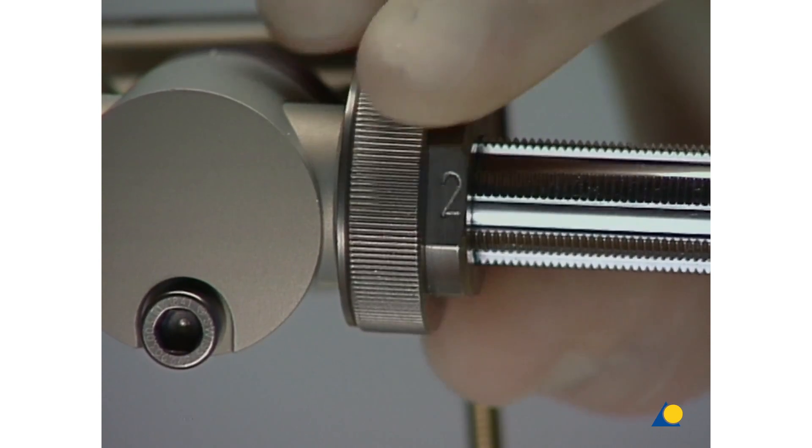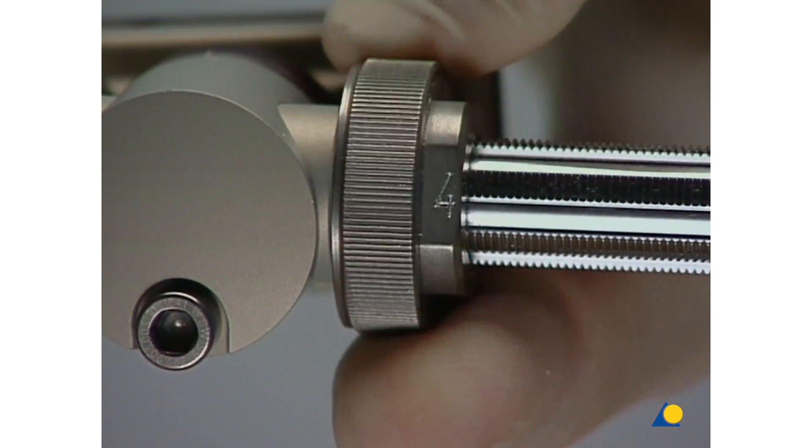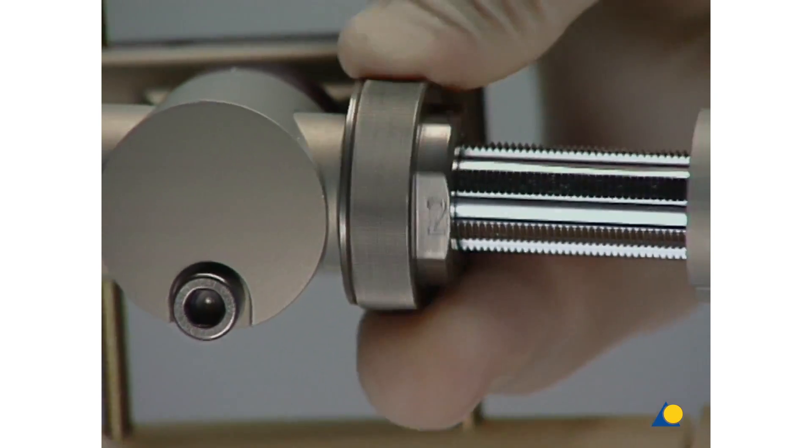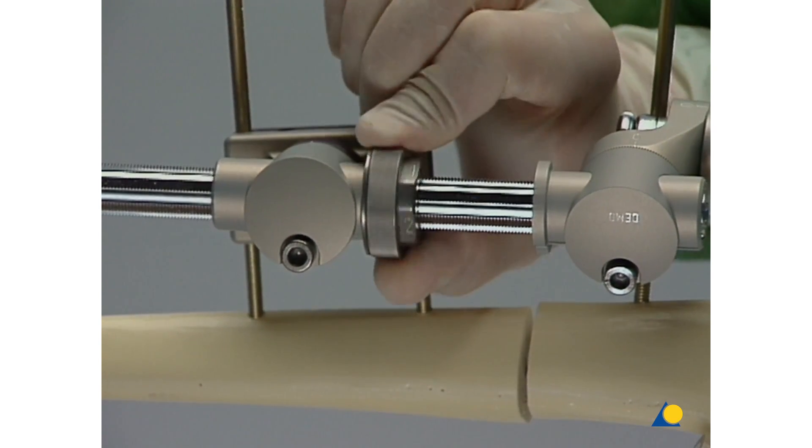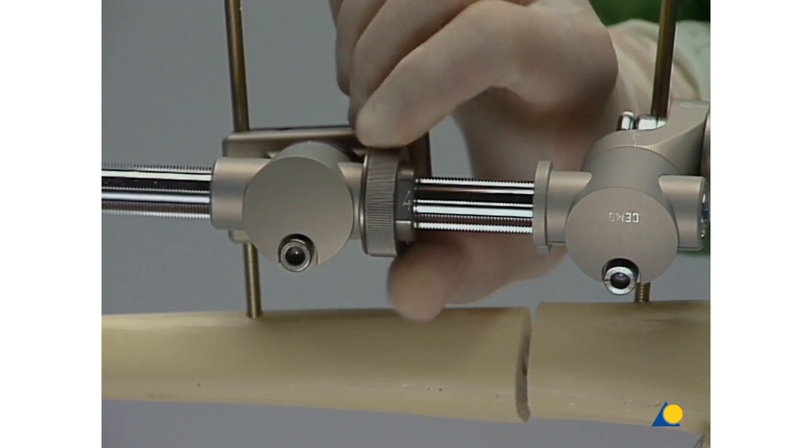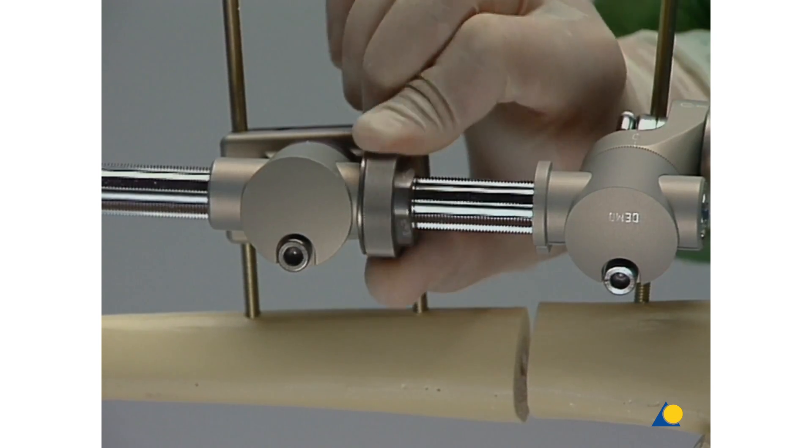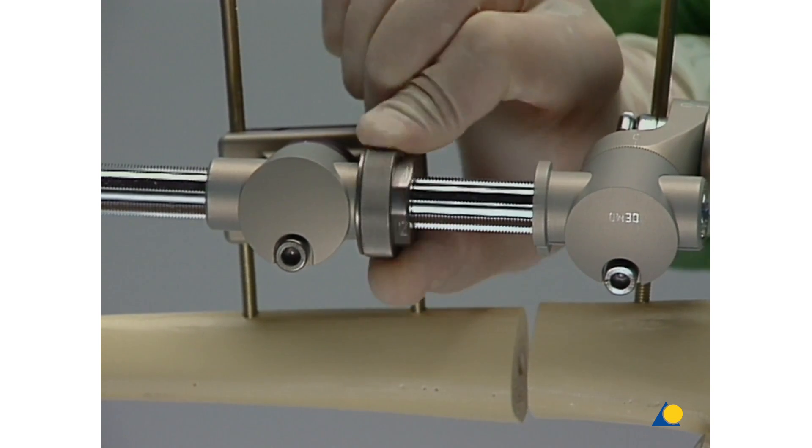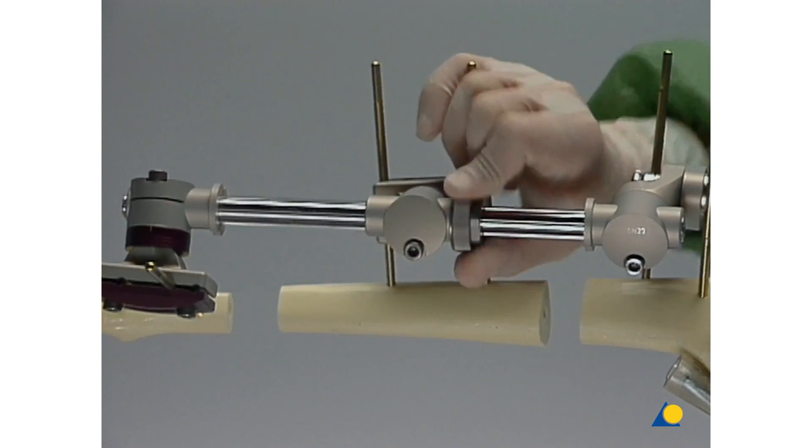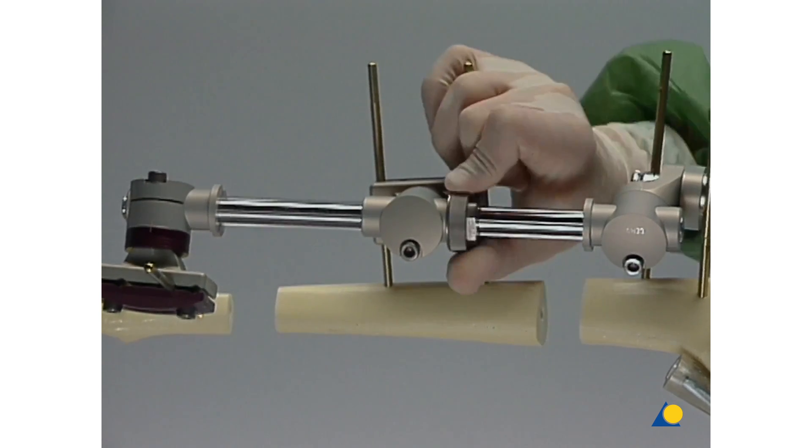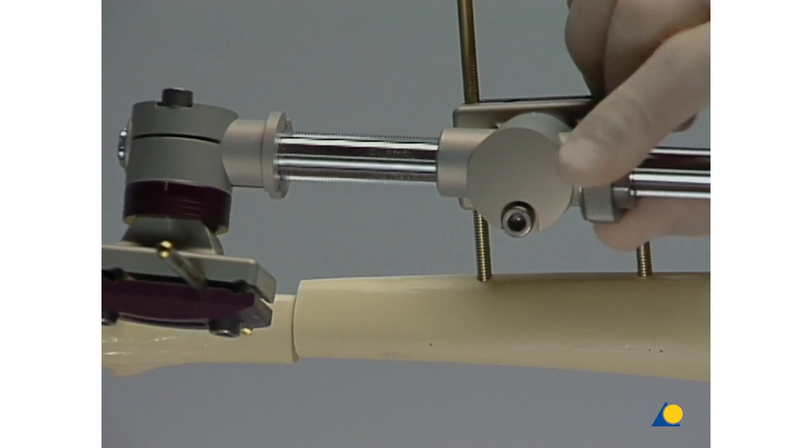The segment transport can now be simulated by turning the large nut on the segment transport sleeve. Each full rotation of the nut corresponds to one millimeter of transport. Every full rotation, and thus each millimeter, is divided into four portions, which can be felt as the nut engages. This division is marked one to four on the nut. The segment is transported into the defect.